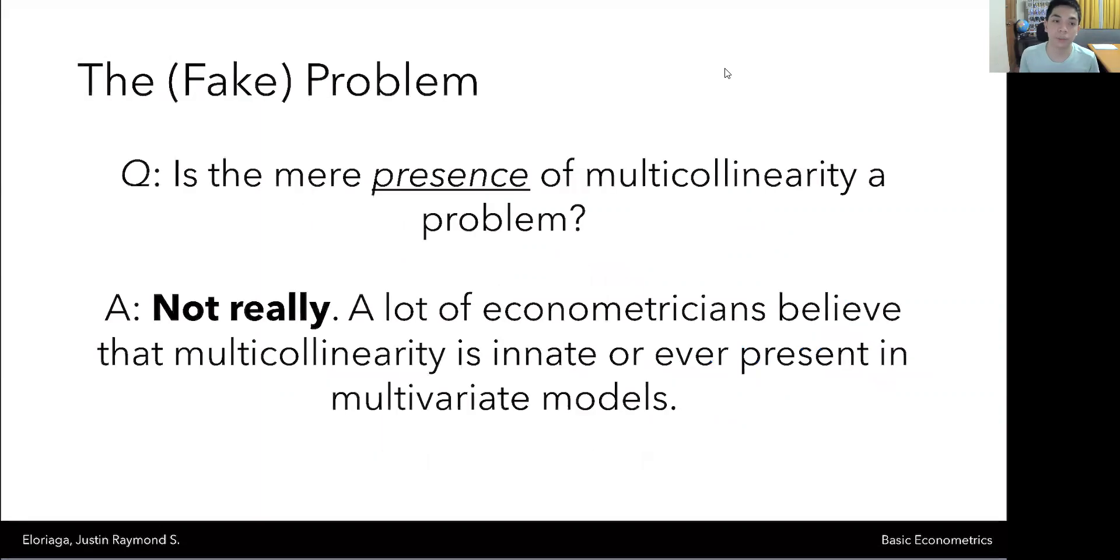So let's ask a couple of questions with this one. So if you ask a typical econometrician, well, is the mere presence of multicollinearity a big problem? The answer to that is not necessarily. A lot of econometricians believe that multicollinearity is innate or ever-present in multivariate models. And that's because when we have independent variables on one side of the equation, because the world is heavily interconnected, there are many relationships that cross paths in some way or another. It's hard to find two exact things that are truly exogenous from one another.